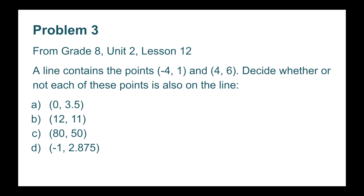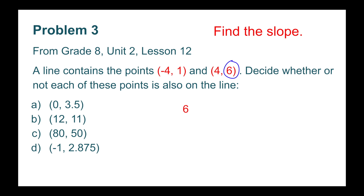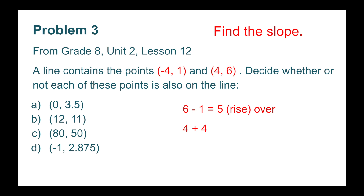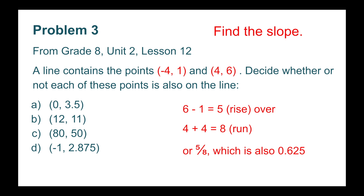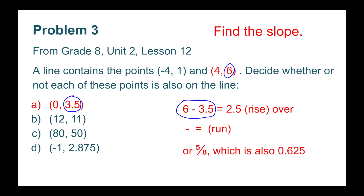Number 3. A line contains the points negative 4 and 1, and 4 and 6. Decide whether or not each of these points is also on the line. We're going to find the slope: 6 minus 1 — the y value minus the y value — equals 5. That's the rise. The difference in the y value represents the rise of the slope. 4 minus a negative 4 — that's the difference of the x values — is the same as 4 plus 4, which equals 8. That's the run. So the rise over run would be 5 over 8, or 5 eighths. 5 eighths is also 5 divided by 8, which would be 0.625. So now we're going to find the slope of the coordinates 4 and 6, and the coordinates 0 and 3.5.